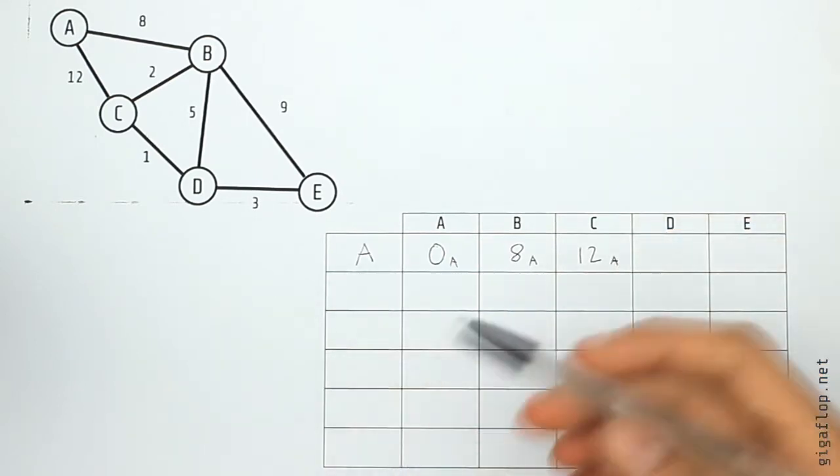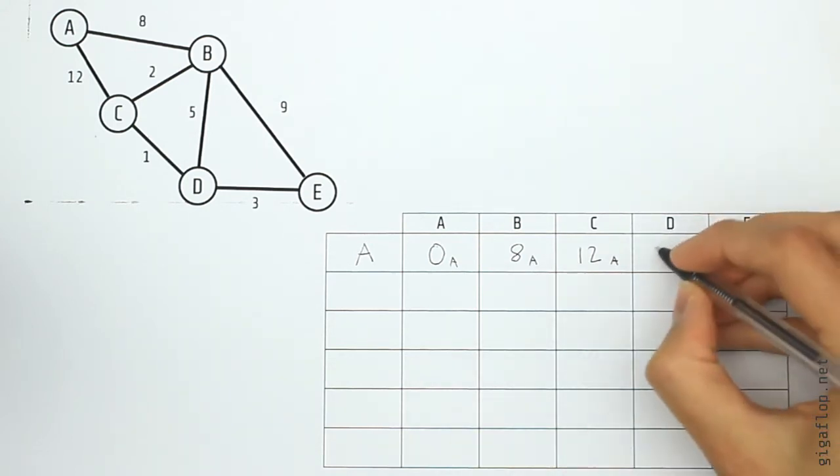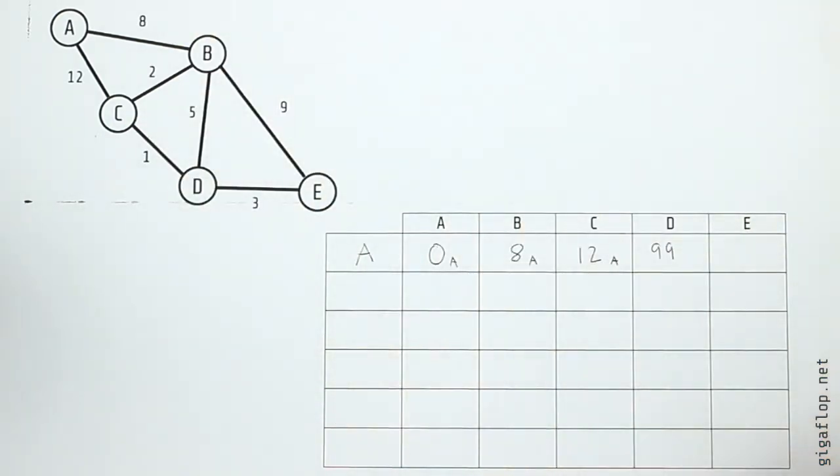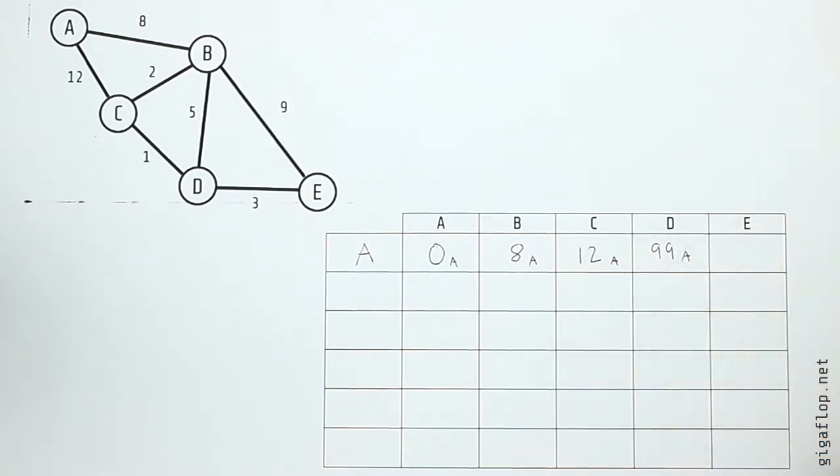Next is A to D, and we see they're not connected directly, so we put an arbitrarily large value. For this example I'm going to use 99 because it's far bigger than any of the weights in the network, so it will never be considered, but you could use infinity or a much larger value if you wanted. And again that comes from A. The same thing happens with E, they're not directly connected, so the weight is 99 from A.